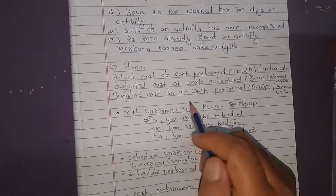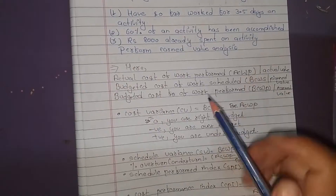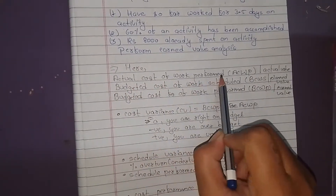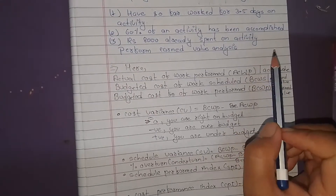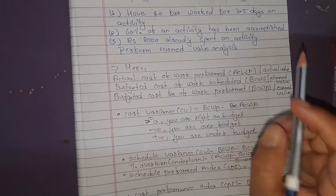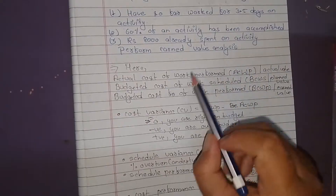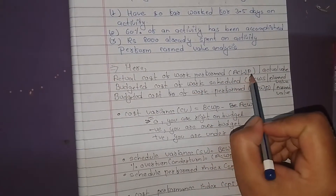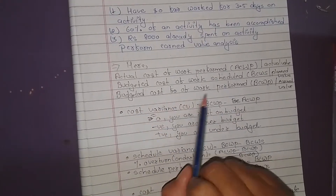First, we need to estimate the terms of ACWP. ACWP is the actual cost of work performed, also called actual value. We need to estimate the actual cost of work performed.